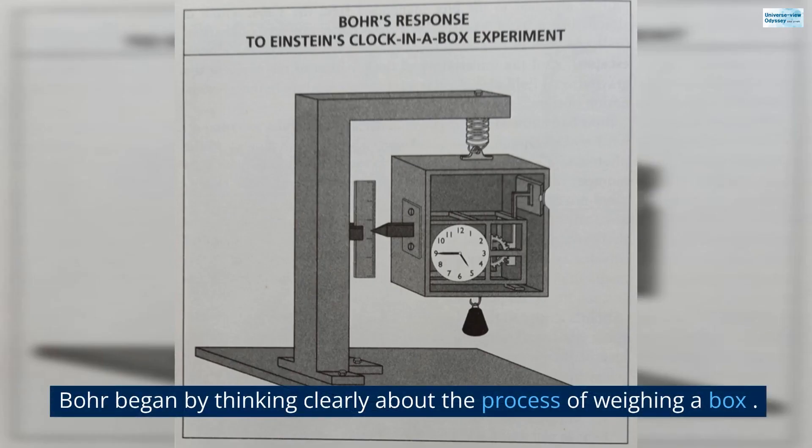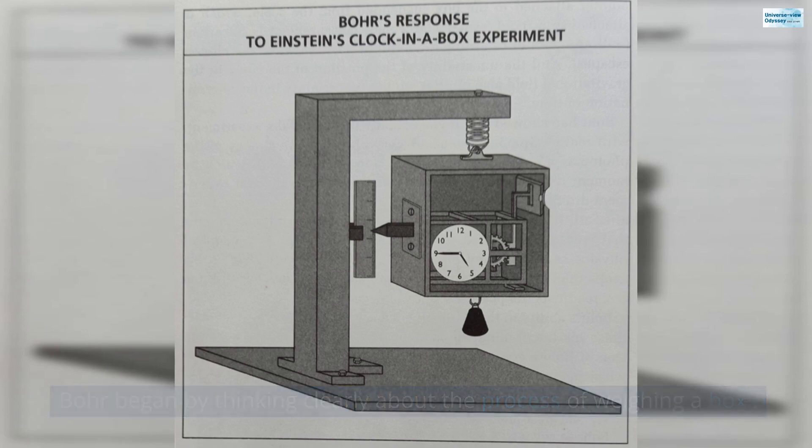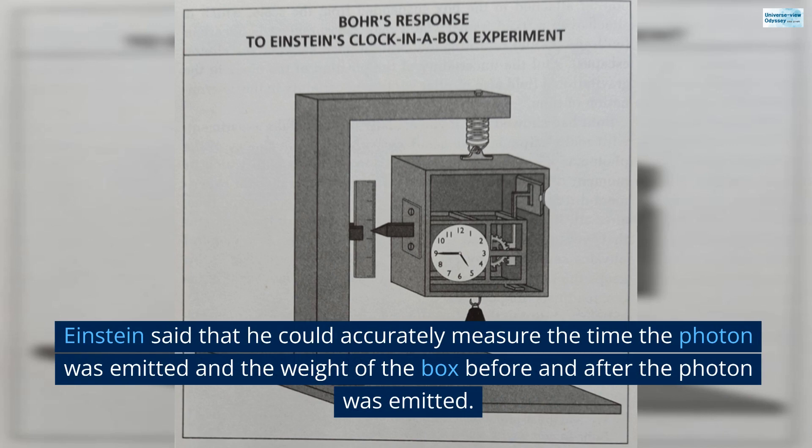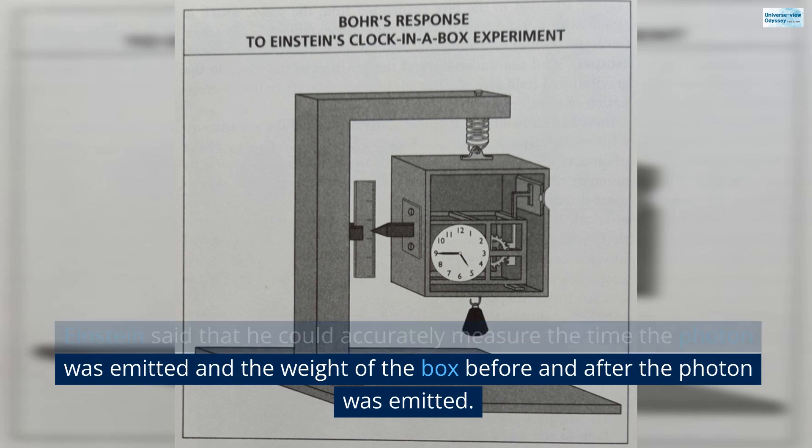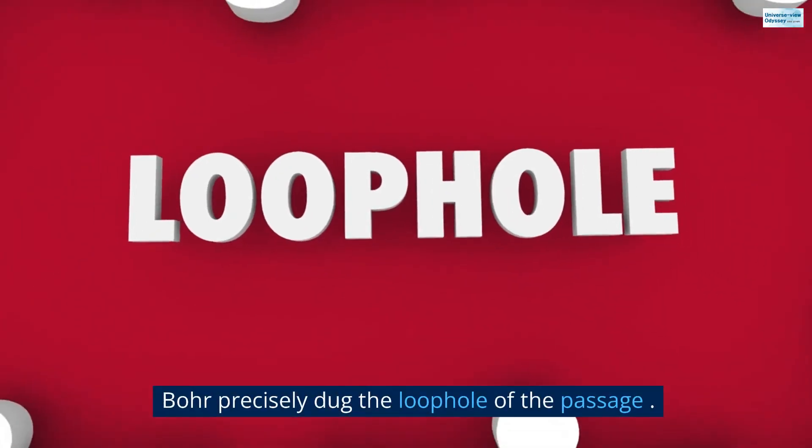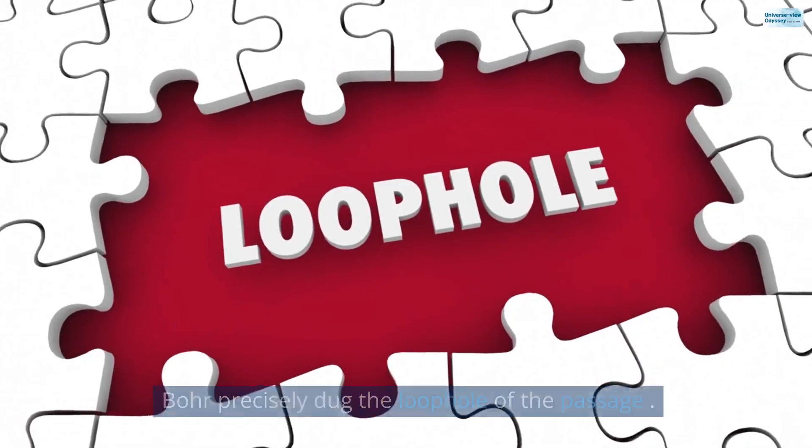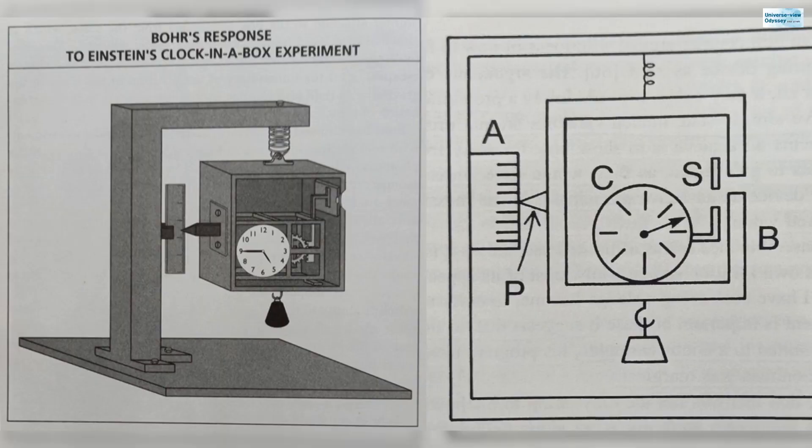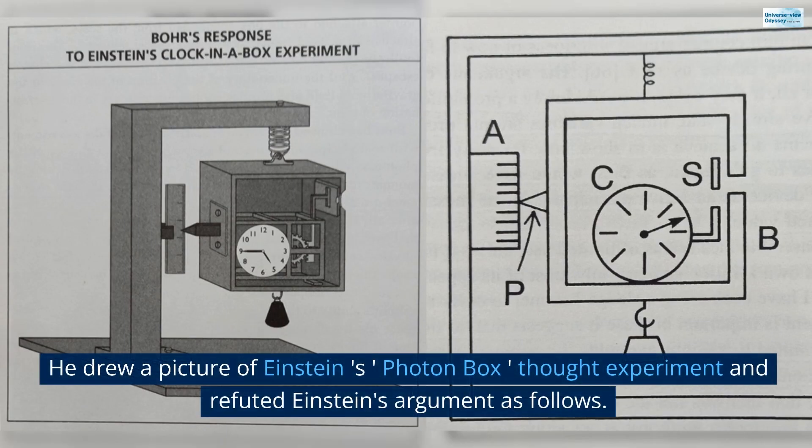Bohr began by thinking clearly about the process of weighing a box. Einstein said that he could accurately measure the time the photon was emitted and the weight of the box before and after the photon was emitted. Bohr precisely dug the loophole of the passage. He drew a picture of Einstein's photon box thought experiment and refuted Einstein's argument as follows.